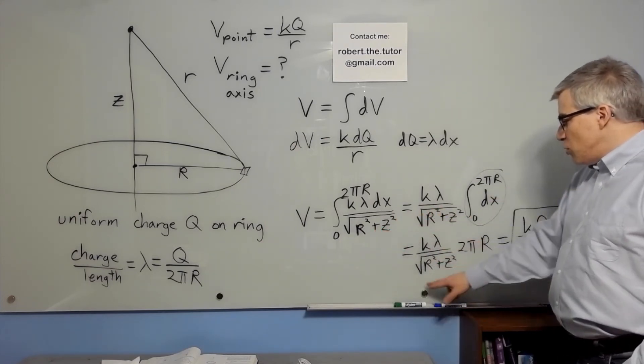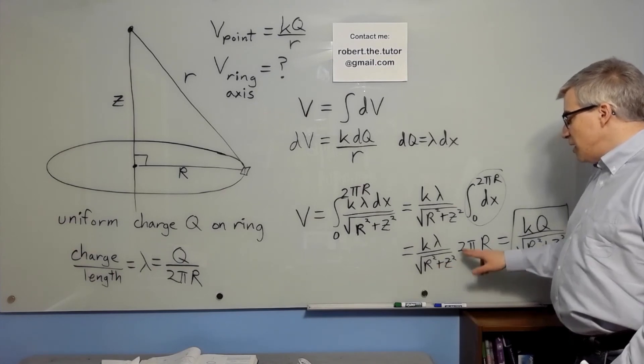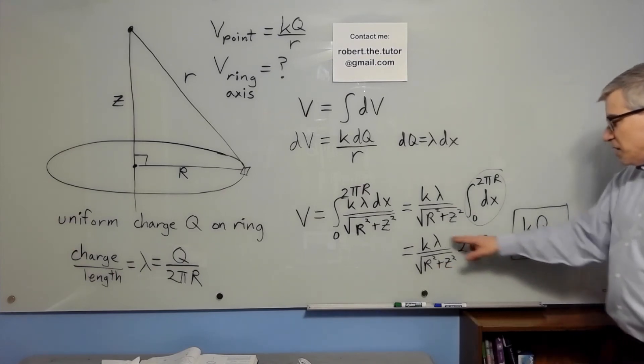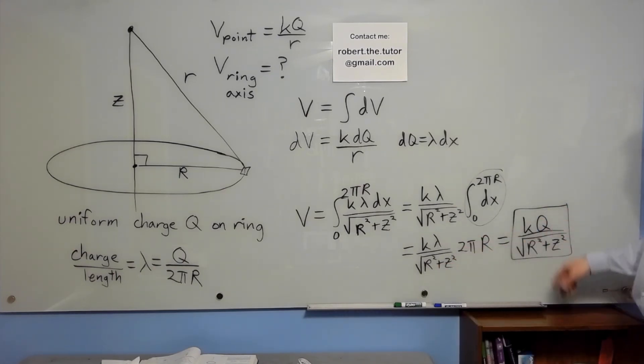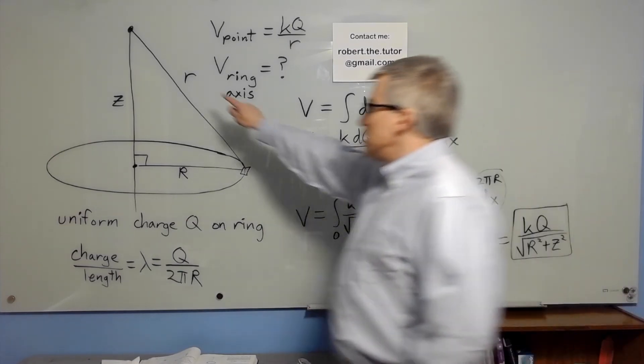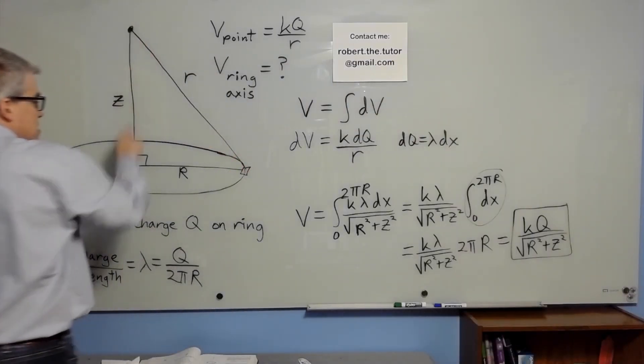So we have K lambda over square root R squared plus Z squared times 2 pi R, but lambda times 2 pi R is Q. So this is KQ over little r, exactly the same as for a point charge, except that all the charge is this far away, not this far away.